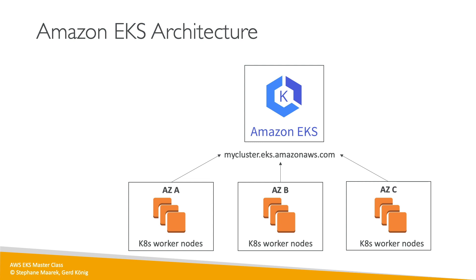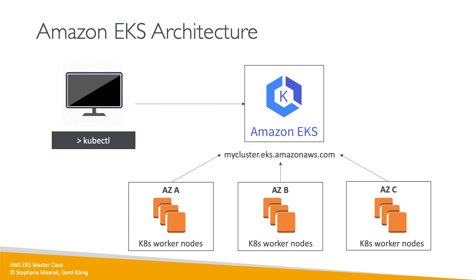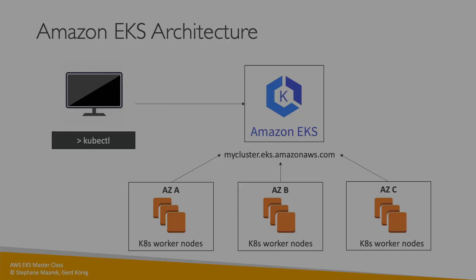From an architectural point of view, we have the control plane and based on the cluster you'll have a URL like mycluster.eks.amazonaws.com. Our worker nodes will be attached to it across different AZs for high availability. Our kubectl will run directly against that control plane, so we'll set it up to leverage our credentials and obtain authorization from the Kubernetes cluster. That's the high-level overview before we go into the actual details.